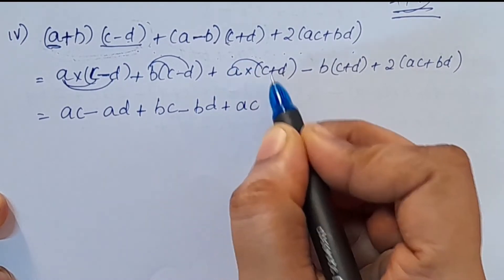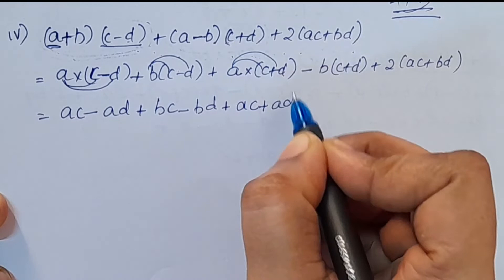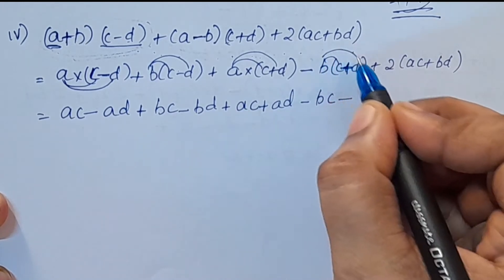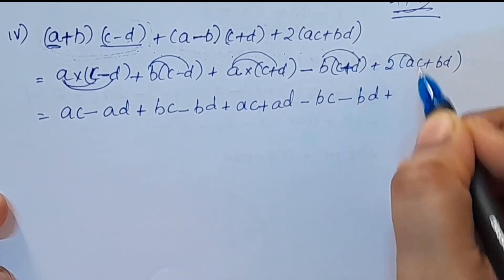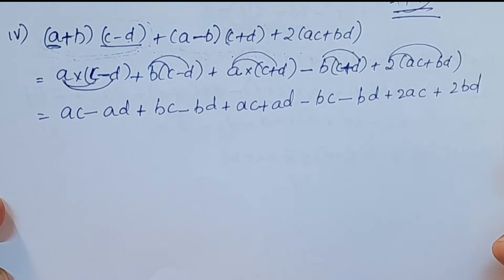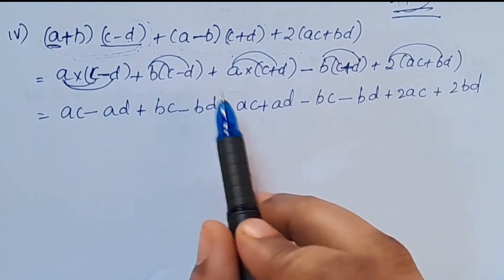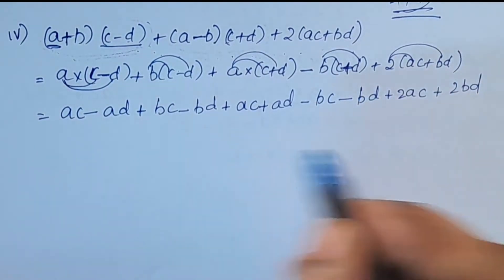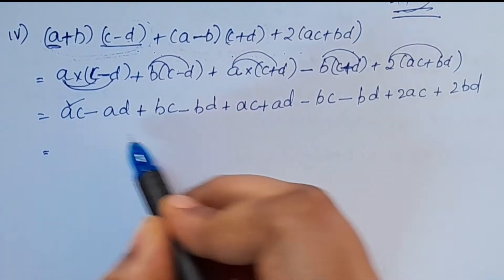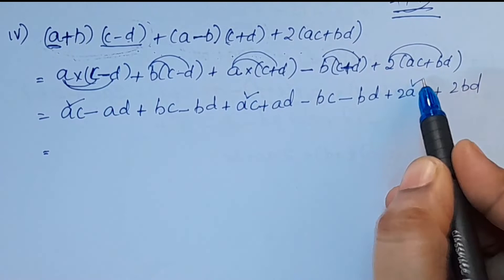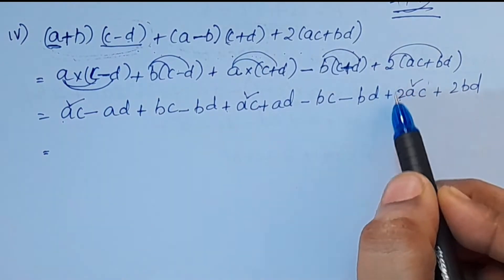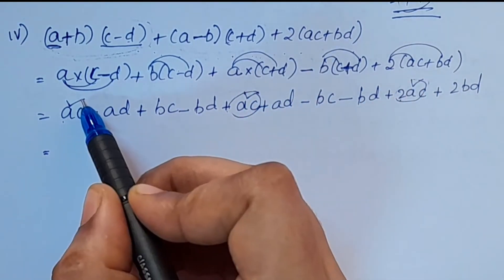We get ac + ad minus bc, plus 2ac plus 2bd. Now we have like terms. Ac — all plus sign. 2ac, 3ac, 4ac.